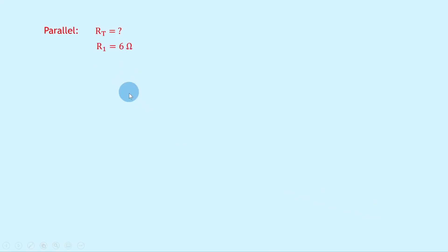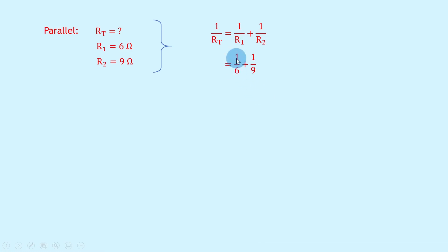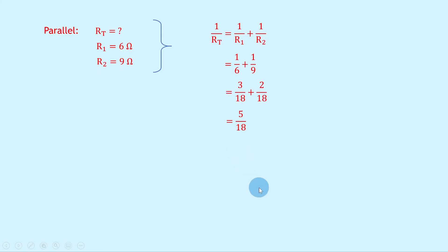Then we do the parallel combination. R1 is 6 ohms and R2 is 9 ohms. Writing down our equation: 1 over RT equals 1 over 6 plus 1 over 9. The lowest common denominator is 18. Multiplying the first fraction top and bottom by 3, and the second by 2, gives 3 over 18 plus 2 over 18, which simplifies to 5 over 18. Flipping both sides gives RT equals 18 over 5, and putting that into your calculator gives a final answer of 3.6 ohms.